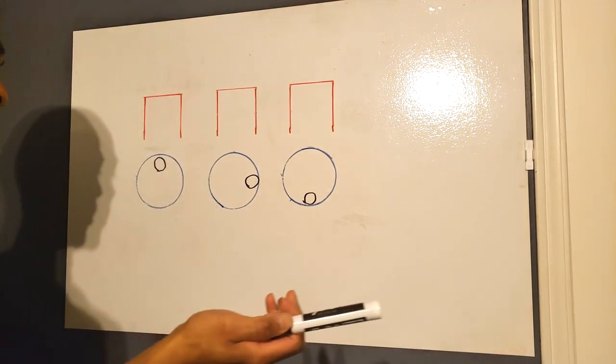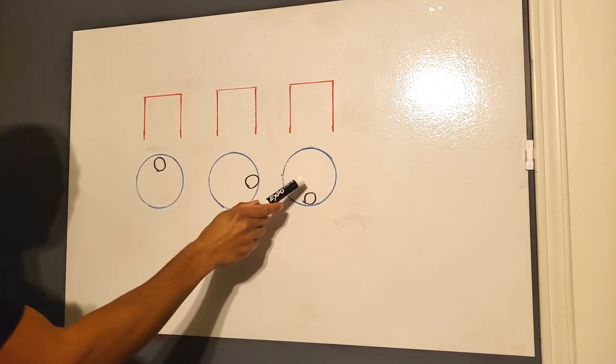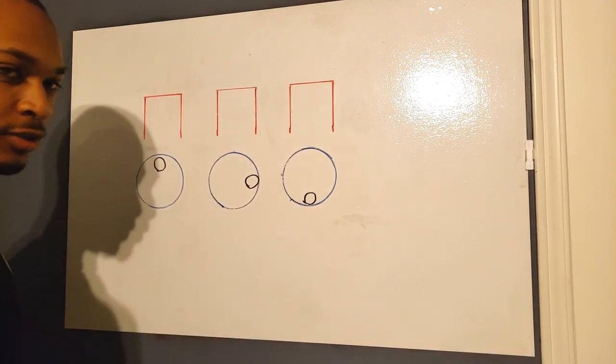So this is a very easy concept to understand and a very simple diagram. This is your crankshaft at the bottom and these are your cylinder bores. I haven't drawn any pistons yet.